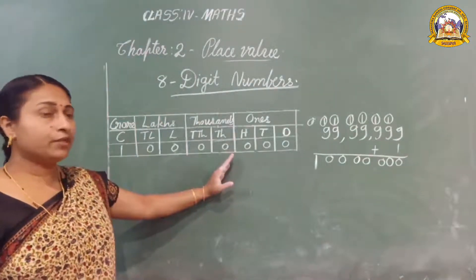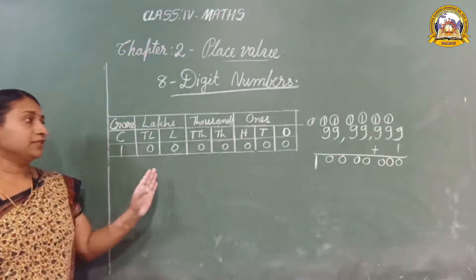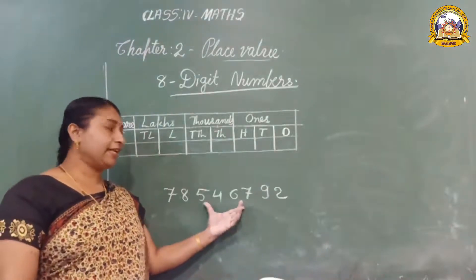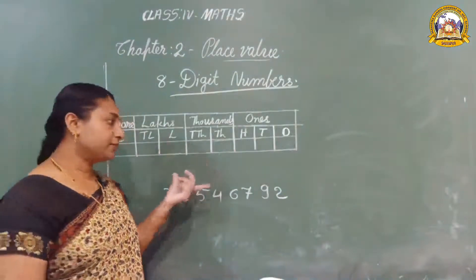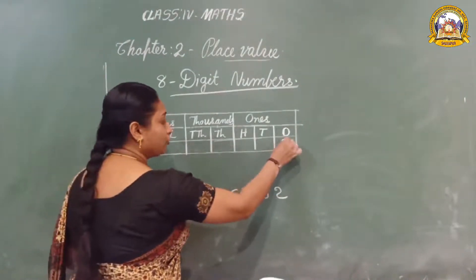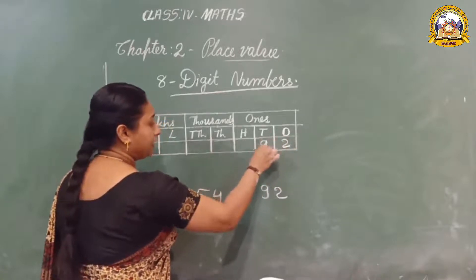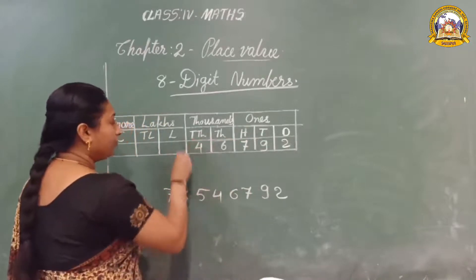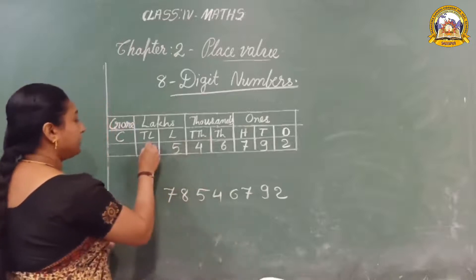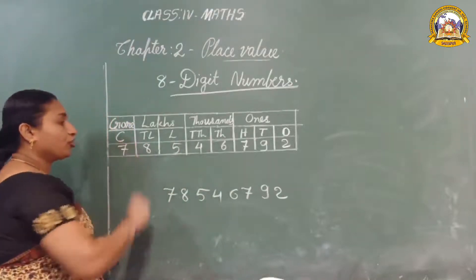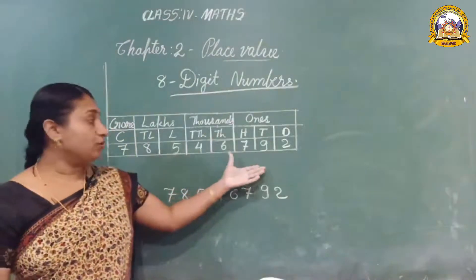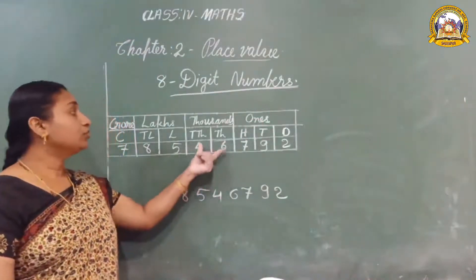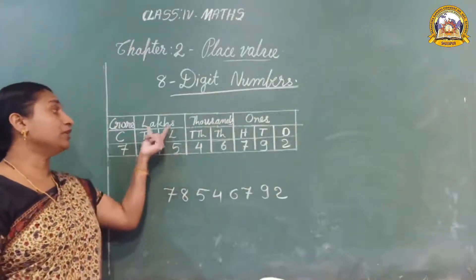Look here. I shall give a number to arrange the digits in the place value chart. Let us arrange the digits: how many ones? Two ones, nine tens, seven hundreds, six thousands, four ten-thousands, five lakhs, eight ten-lakhs, and seven crores. As you know, there are three digits in the ones period, two in the thousands period, two in the lakhs period, and now we have a new member — crore.